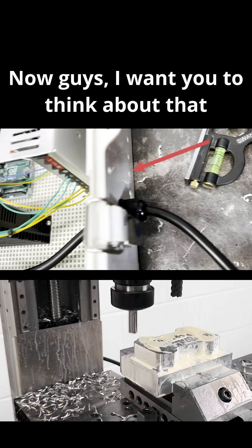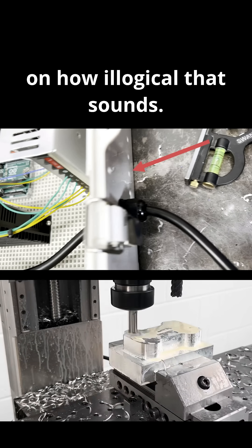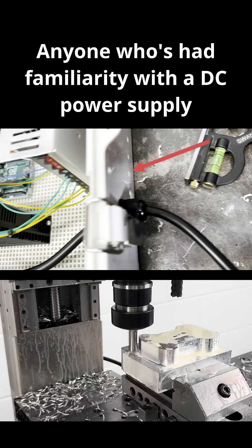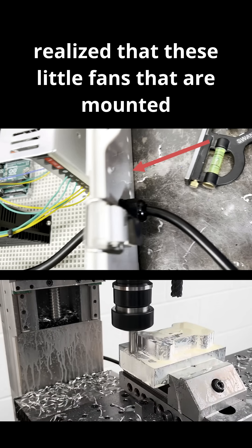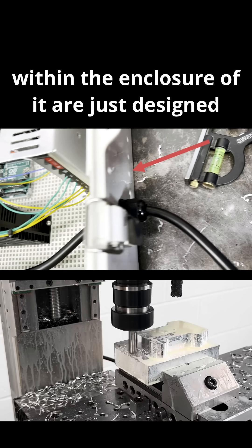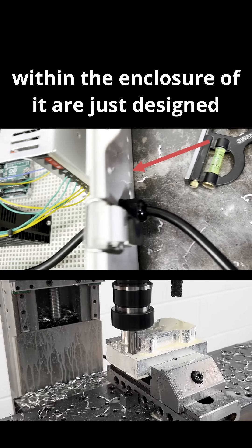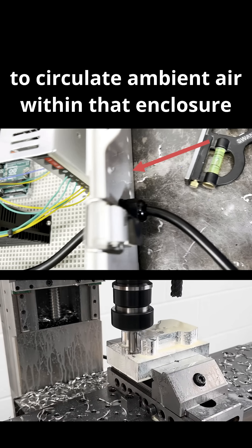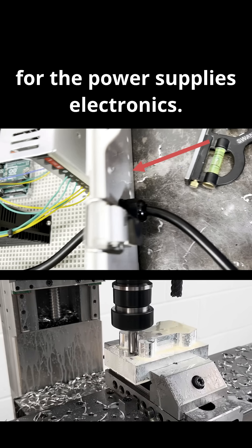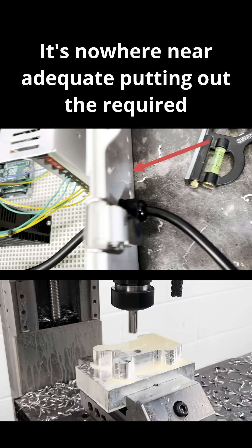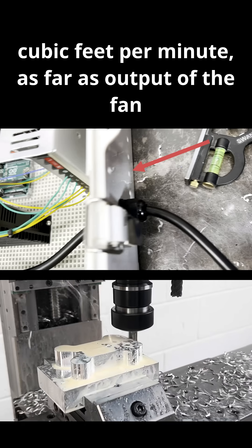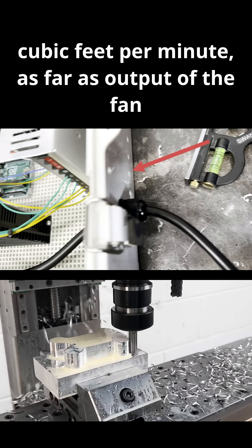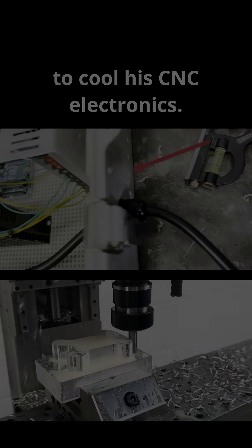Now guys, I want you to think about that, on how illogical that sounds. Anyone who's had familiarity with a DC power supply realizes that these little fans that are mounted within the enclosure are just designed to circulate ambient air within that enclosure for the power supply's electronics. It's nowhere near adequate, putting out the required CFM (cubic feet per minute) as far as output of the fan to cool his CNC electronics.